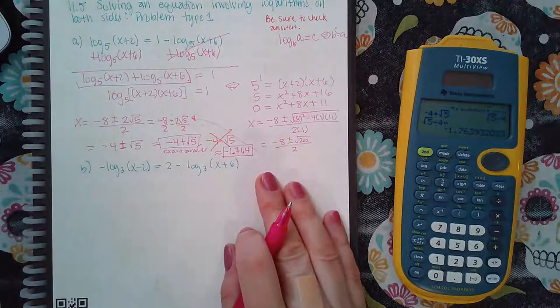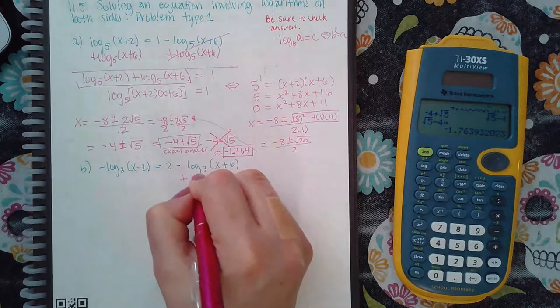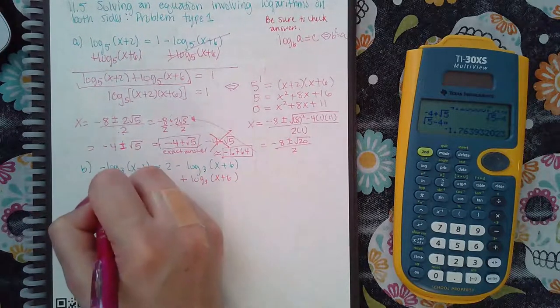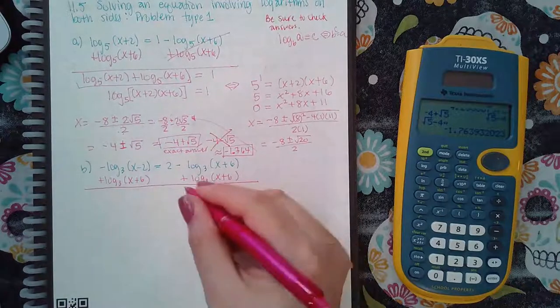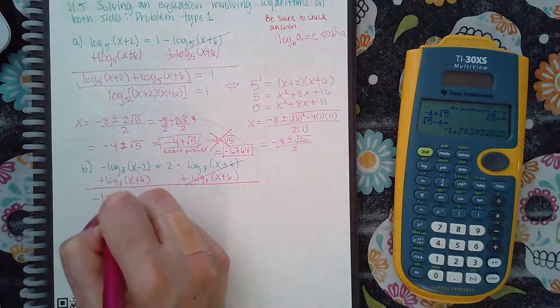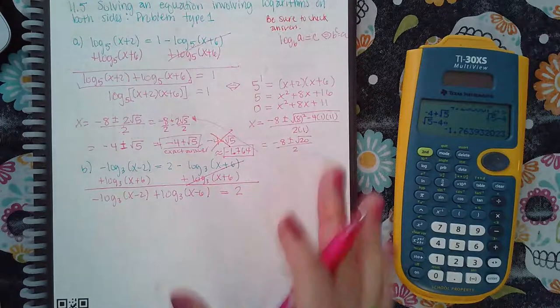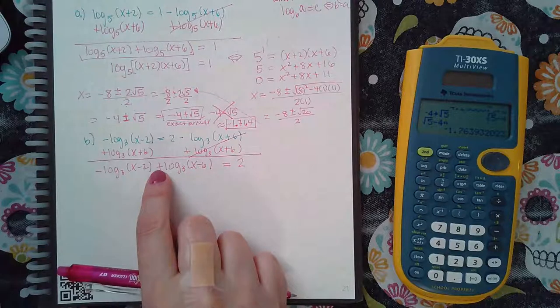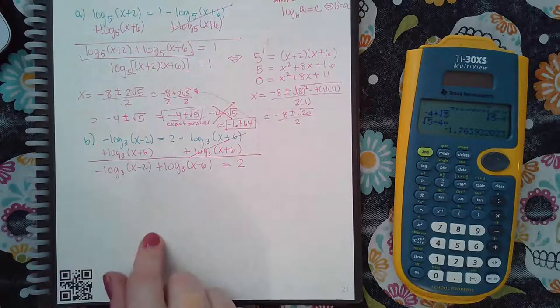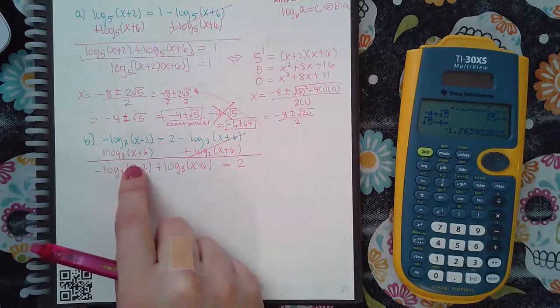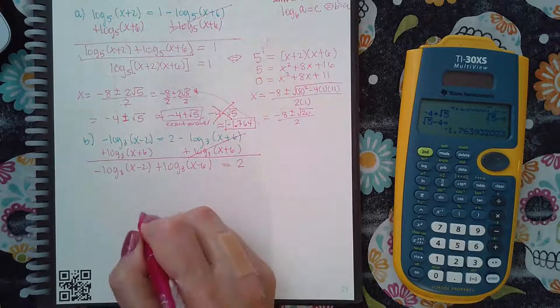So same thing for B. What I want to do is I want to get this number by itself. So I'm going to add this to both sides. So then it'll cancel here, and on this side, I have negative log three of x minus two plus log three of x minus six equal to two. And the properties tell us that when you have positive, it's going to get multiplied. When you have negative, it's going to be divided. So the fact that I have a negative on this side means I'm going to have a fraction. And this argument is behind the minus sign, so that argument will go in the denominator. This argument will go in the numerator because it has a positive log.